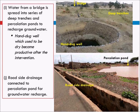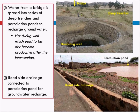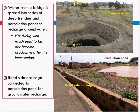Water from a bridge is managed with a series of percolation systems and deep trenches, and a well has been developed there. The deep trenches were constructed last year, though water has been flowing through the bridge throughout. Existing roadside drainage constructed 3–4 years ago had a percolation pond added last year to recharge groundwater at the downstream edge.